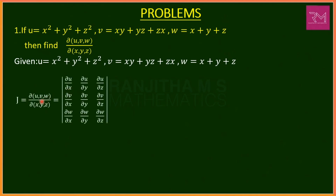We know that the Jacobian for u, v, w with respect to x, y, z is given by the 3×3 determinant of del u/del x, del u/del y, del u/del z, del v/del x, del v/del y, del v/del z, del w/del x, del w/del y, del w/del z. In the first step we find all these partial derivative values, then apply the determinant formula and simplify to get the Jacobian.